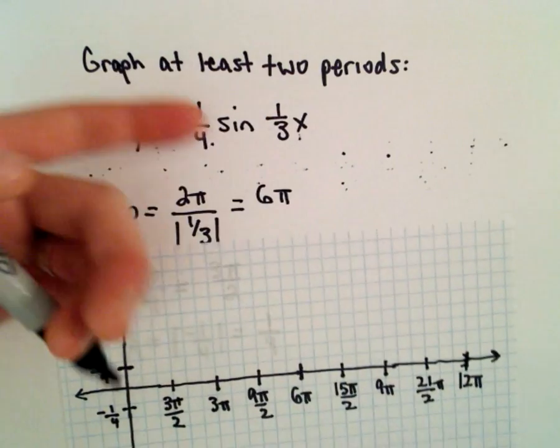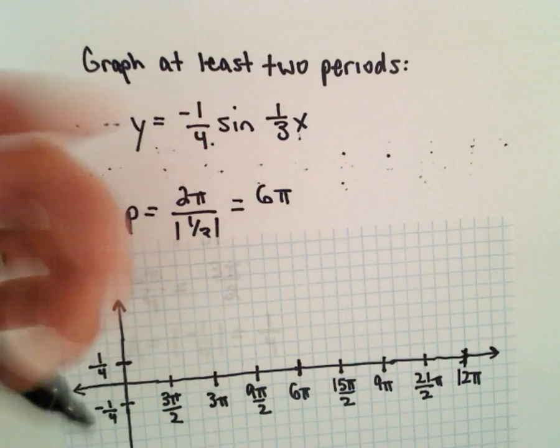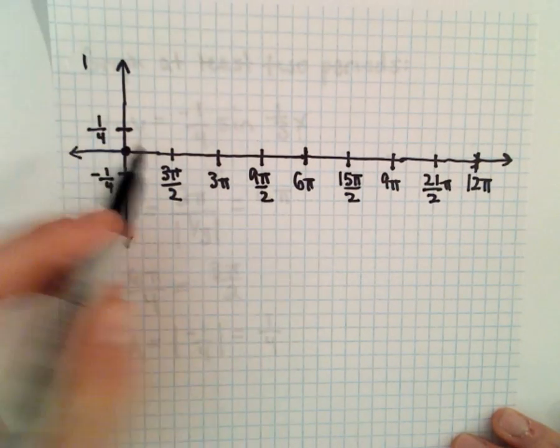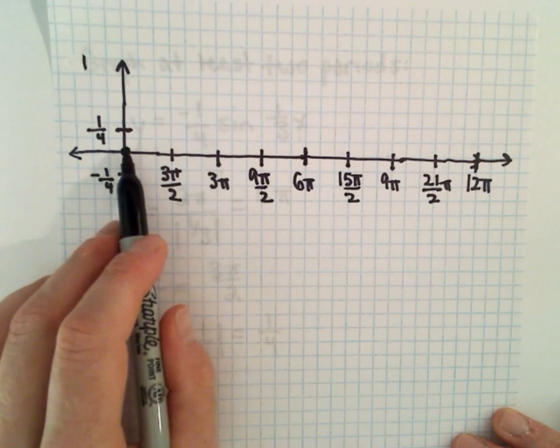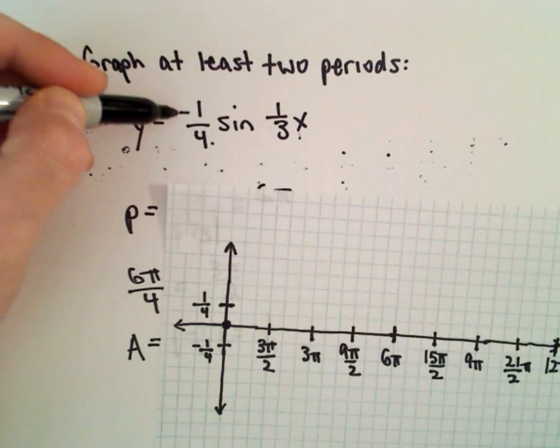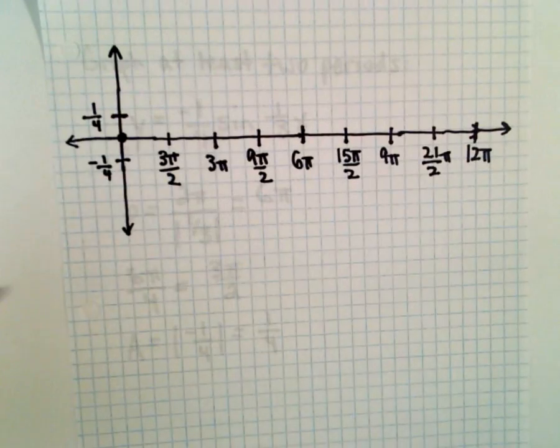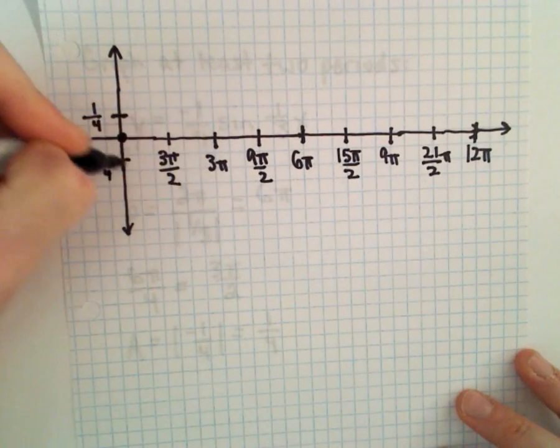And now it's just filling in the points. So, if x was 0, sine of 0 is 0, and normally, if the value up front is positive, it would be going up. But since we have a negative one-fourth, it'll be going down.